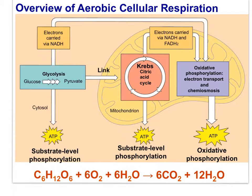Cell respiration is the controlled release of energy from glucose or other organic compounds to form ATP. ATP provides immediate energy for cell needs like active transport, synthesis of large molecules, or sliding protein filaments that provide for movement. Aerobic cell respiration requires oxygen and gives a large yield of ATP from glucose. The oxygen plays its role in a process known as oxidative phosphorylation.